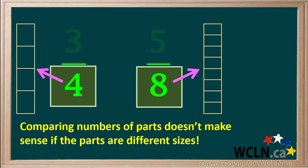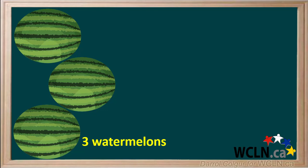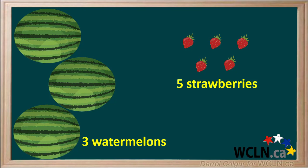Comparing numbers of parts does not really make sense when the parts are different sizes. It's much like comparing fruits. Here we have three watermelons and five strawberries. There's a greater number of strawberries than watermelons, but there's a lot more to eat in three watermelons than in five strawberries.